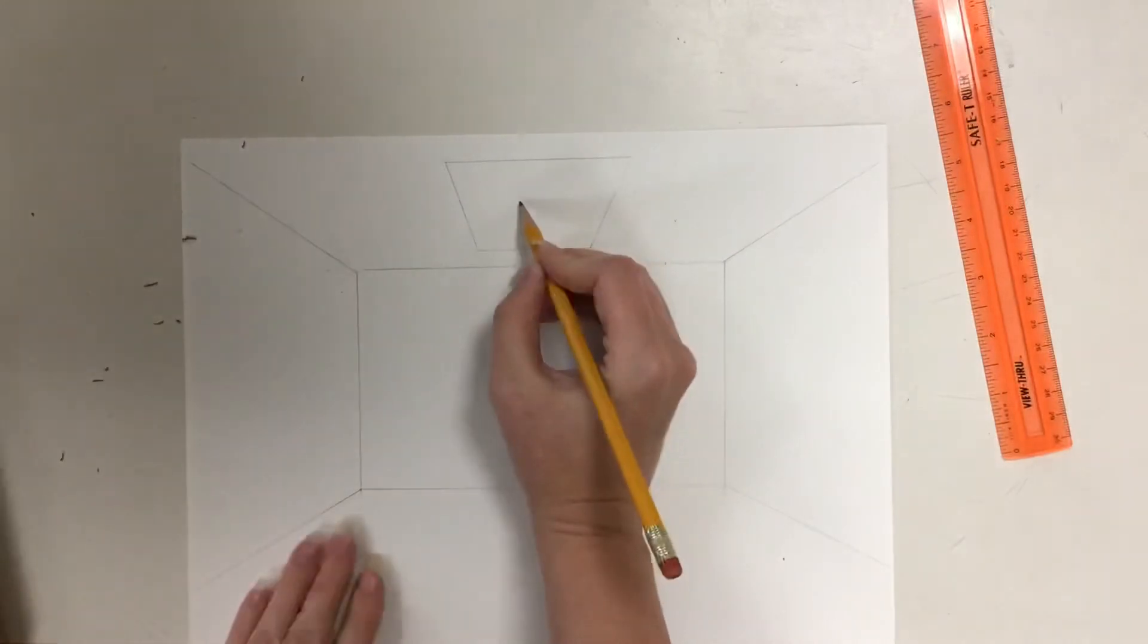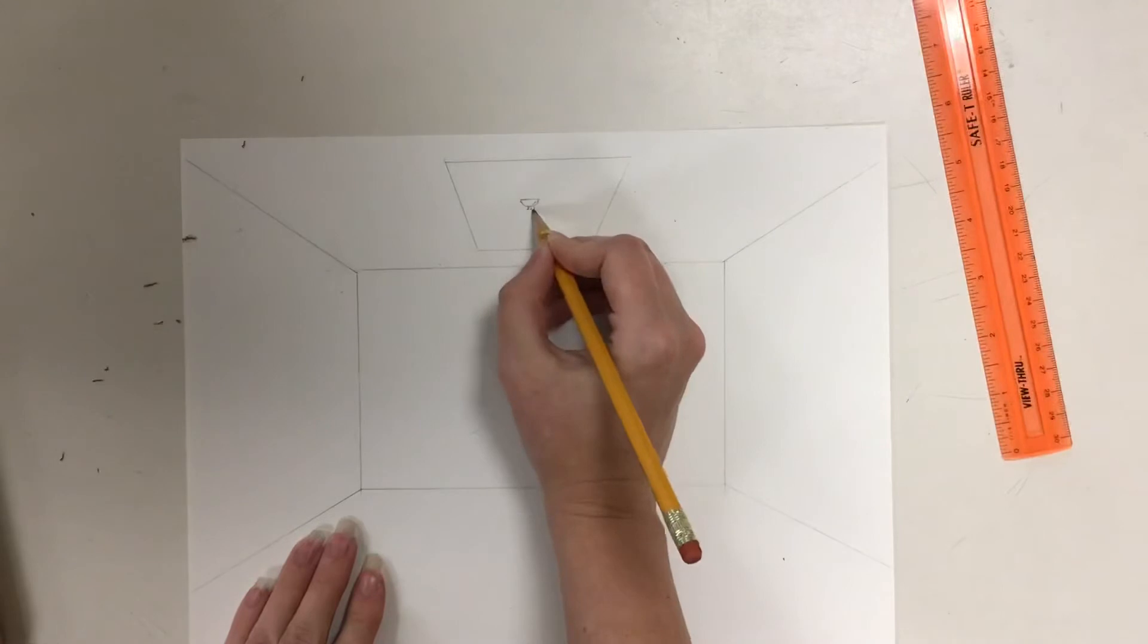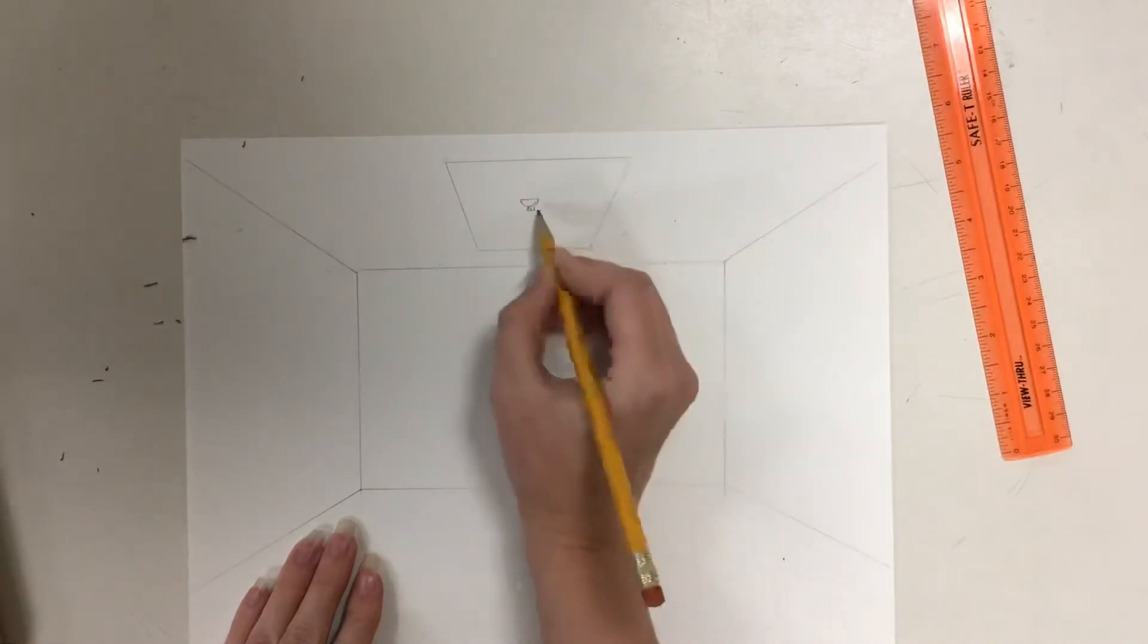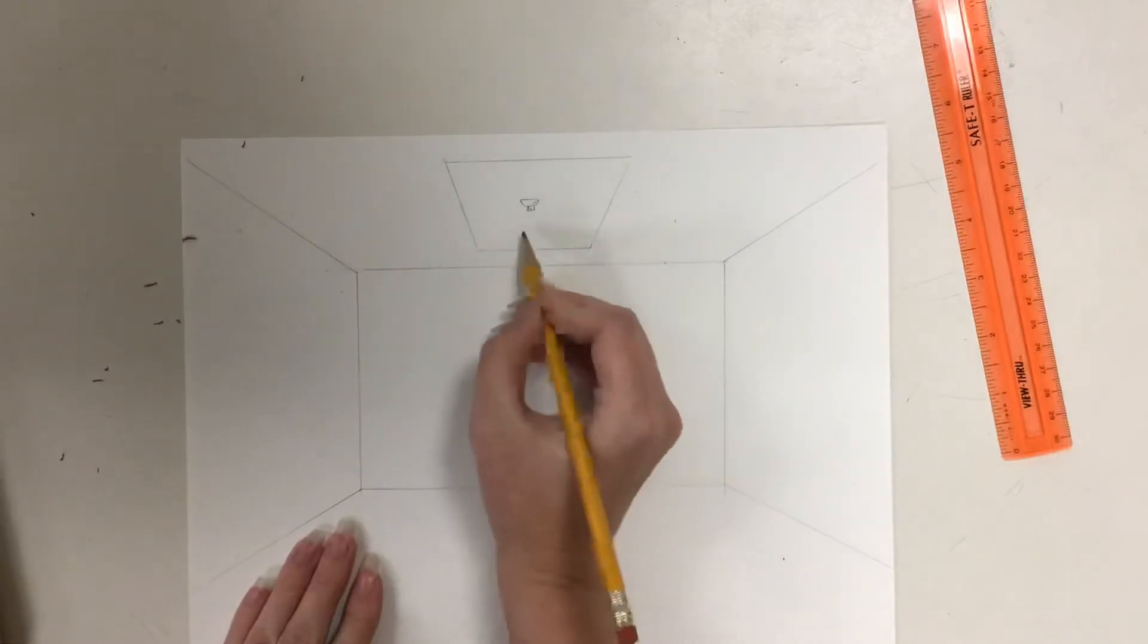So I'm going to start here and put in the part where it attaches to the ceiling. And then the part that the petals are coming off of is kind of just like a circle.